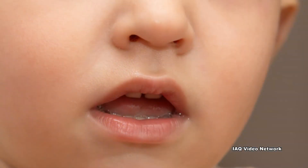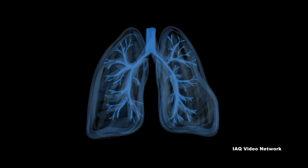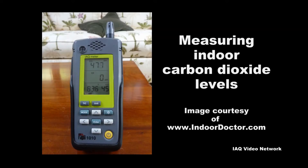People and animals also produce carbon dioxide as an end product of cellular respiration. The CO2 is exhaled from the lungs. This means levels of the gas can vary greatly in buildings, and is why it is sometimes measured as an indicator to help assess indoor air quality conditions.